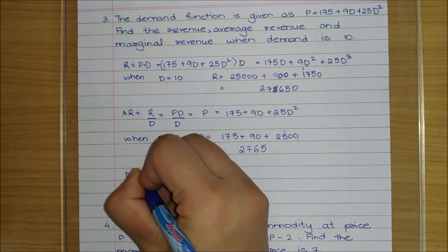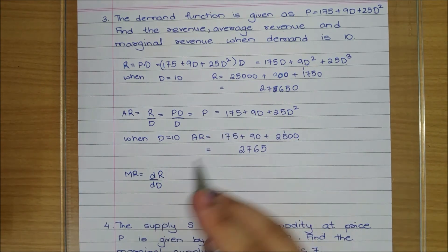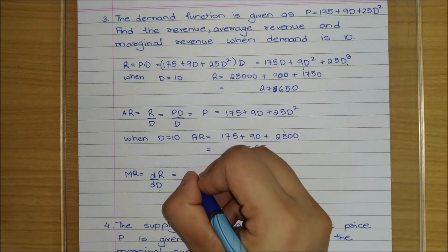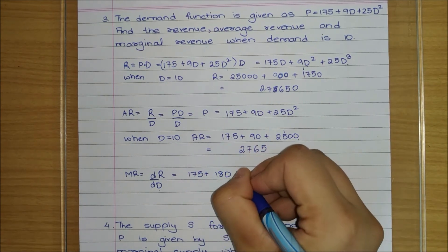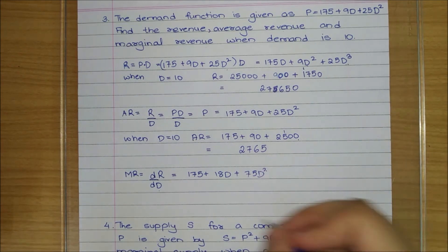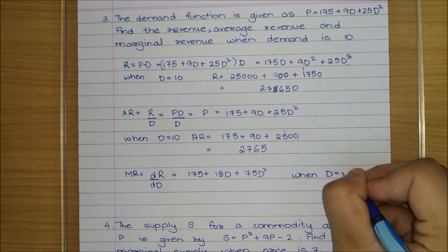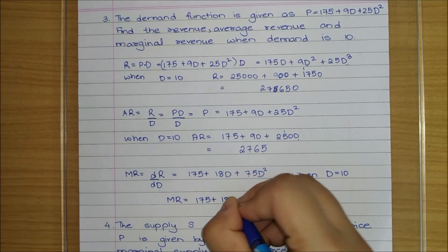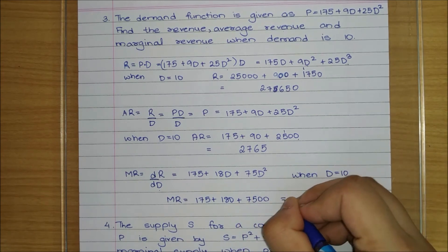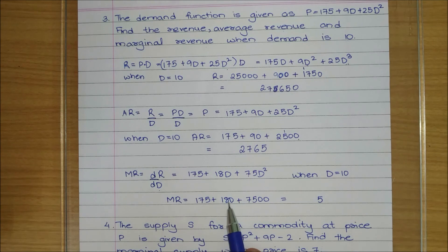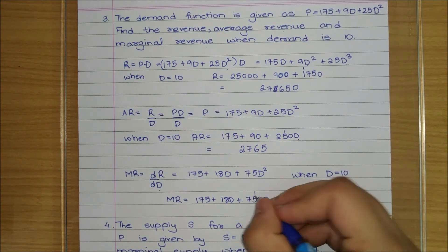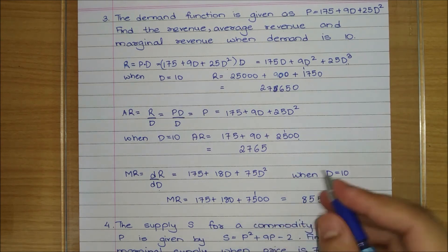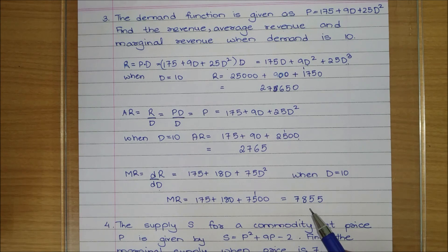Marginal revenue = dR/dd = differentiation of 175d + 9d² + 25d³ with respect to d = 175 + 18d + 75d². At d = 10: marginal revenue = 175 + 180 + 7500 = 7855.